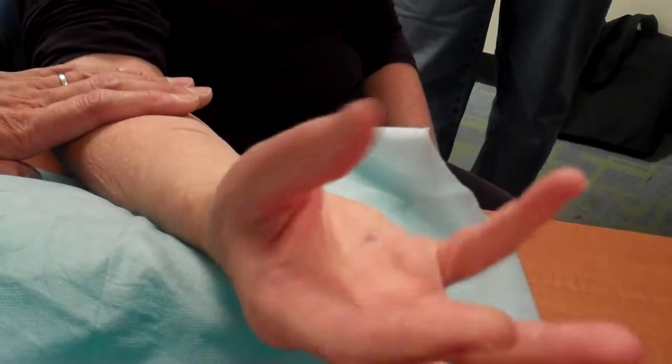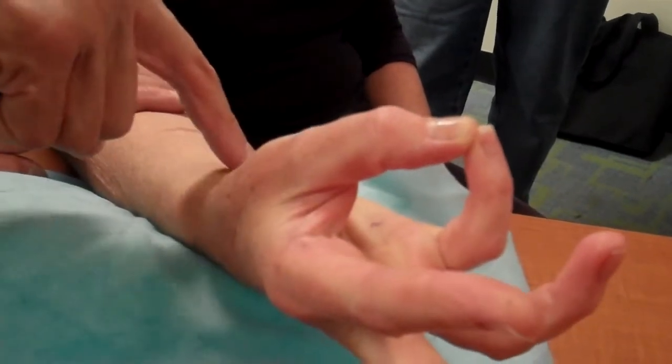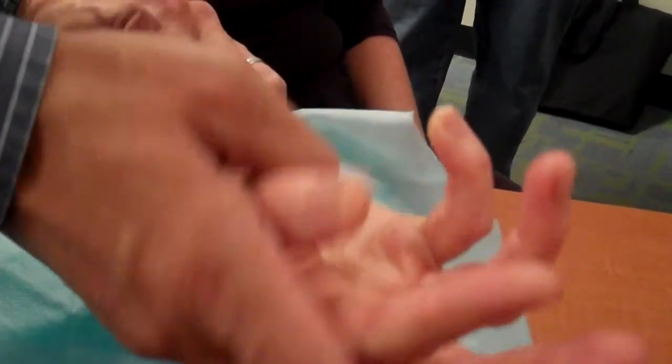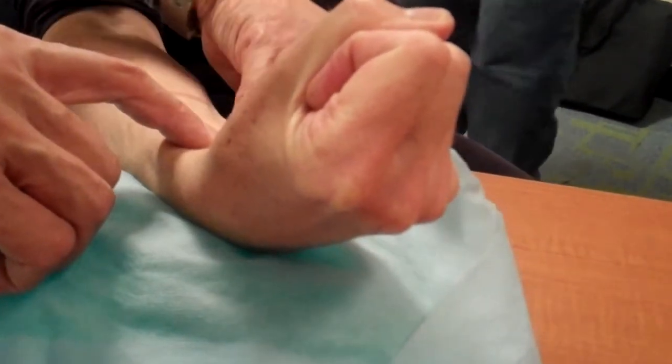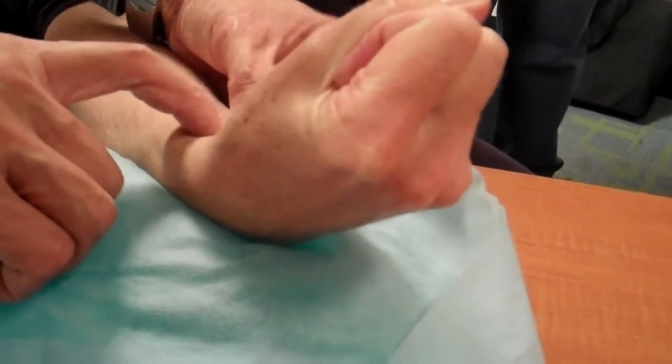So palmaris longus, you can see the palmaris longus just right here. Now relax. Bring your wrist up and you can see the flexor carpi radialis, palmaris longus, this one right here, flexor carpi radialis, so between the two.